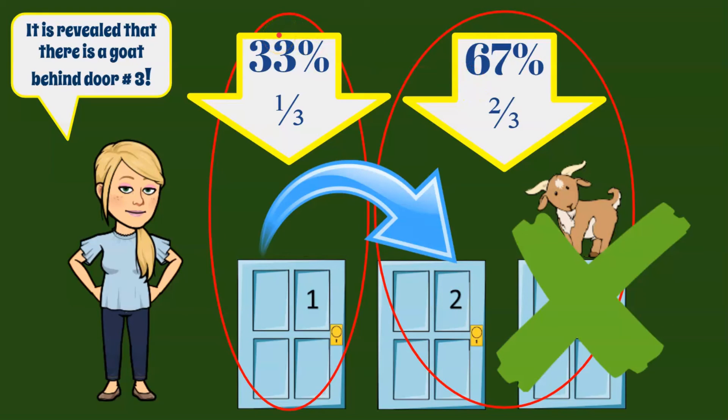You picked door number one, and you had a one in three chance of winning. There was a two in three chance or 67% that the goat was one of them, of course, but that the car was there. So there was a 67% chance that you would win the car behind one of these other doors.